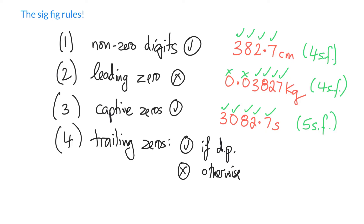So what is an example of a trailing zero that counts versus one that does not? If there's a decimal point, we count it. For example, 31.00 amperes — the 3 and the 1 are non-zero and always count. There are no leading or captive zeros. There are two zeros on the end, and because there is a decimal point anywhere in the number, those trailing zeros are counted. So that would have four significant figures.